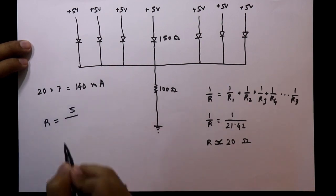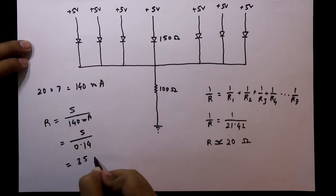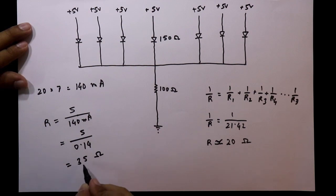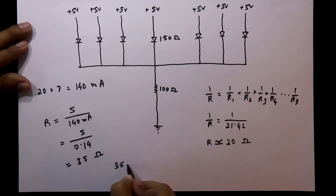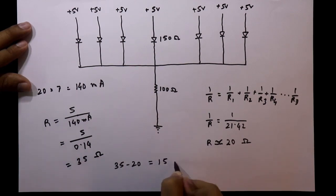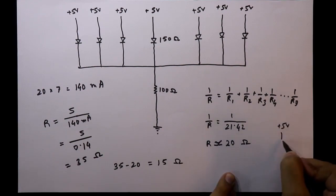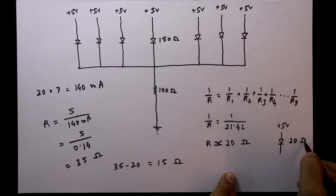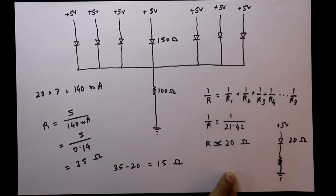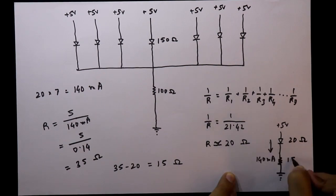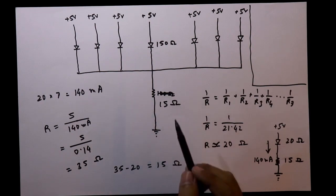To get 140 milliamperes at 5 volts, we need total R = V/I = 5/0.14 ≈ 35 ohms. The equivalent internal resistance of the 7 LEDs in parallel is 20 ohms, so we need an external resistor of 35 − 20 = 15 ohms. The equivalent circuit is: +5V, then a 20-ohm equivalent LED resistance, then a 15-ohm external resistor to ground.